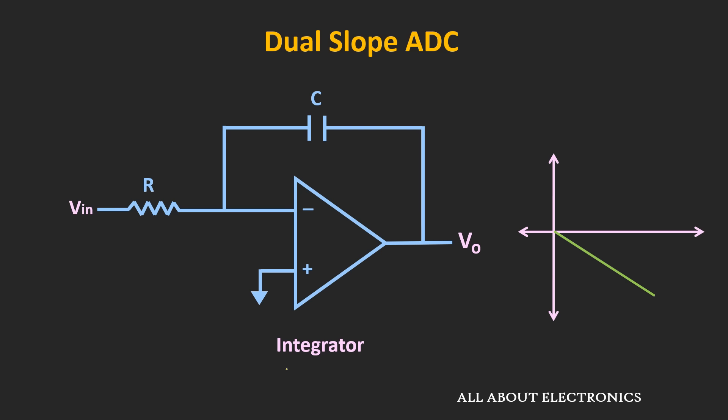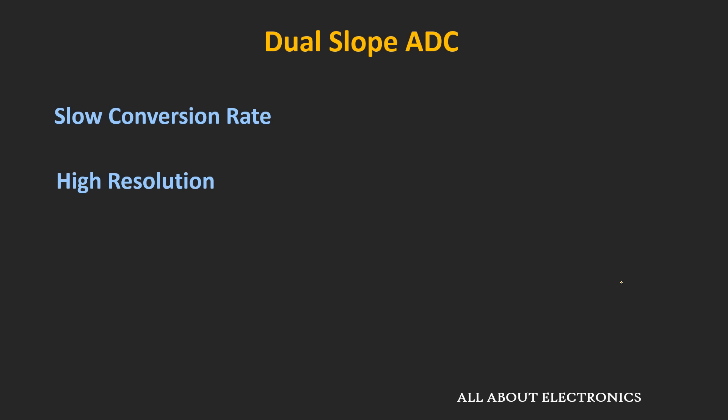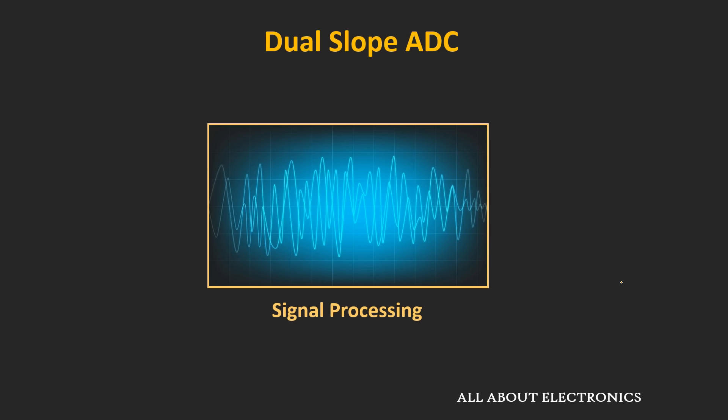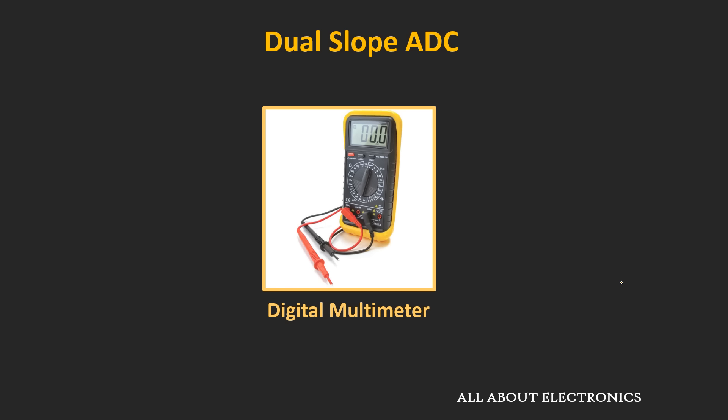This Dual Slope ADC is an integrating type ADC, meaning that it uses the integrator circuit for the conversion. This type of ADC provides high resolution with good accuracy, but it has a slow conversion time. Due to that, it is not used for data acquisition — for example, not in signal processing applications where a lot of data needs to be acquired continuously. It is preferred in applications where the signal is changing very slowly. Due to its good accuracy and high resolution, it is used in measurement instruments where good reliability is essential. In fact, it is commonly used in digital multimeters.